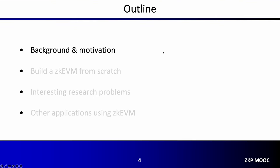This lecture will be divided into four parts. First, I'm going to introduce some background and motivation of why we need ZKVM in the first place, and why it has become so popular in recent two years. Then I'm going to guide you through a complete journey of how to build a ZKVM from scratch, including the circuit organization and the proof system. After that, I will go through some interesting research problems we met when building our ZKVM. Finally, I will introduce some other applications that can also leverage ZKVM.